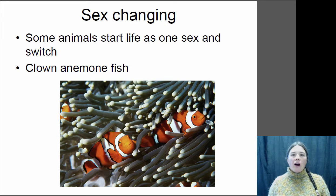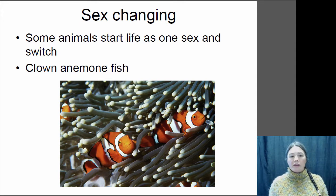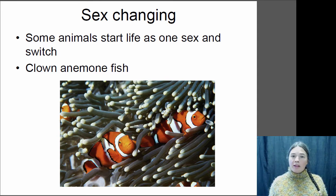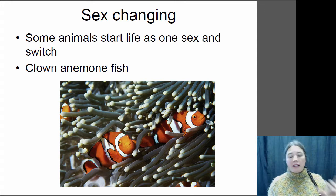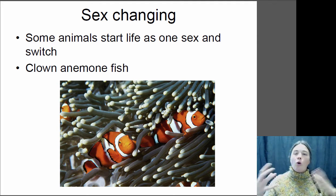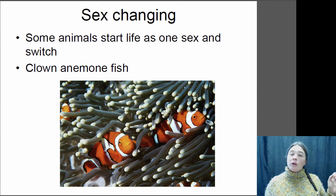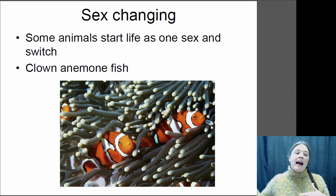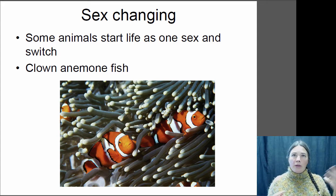There are some species that don't stay the same sex their whole life — they actually will change sex over the course of their life, starting out as one sex and becoming another. One great example is the clownfish. Clownfish live in sea anemones in groups, and in the group the largest fish is always the female, the second largest is the male, and the other fish don't have a determined sex. The male and female reproduce, lay eggs, and the whole group helps tend the young. If the female were to die, the male would then become the female — it actually changes sex — and then the next largest fish in the group becomes the male. So the biggest fish is always the female regardless of whether it was a male in the past.